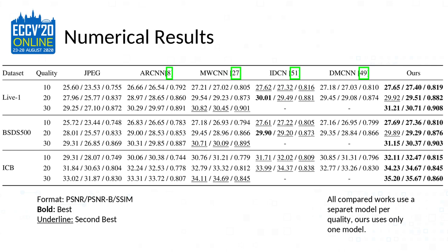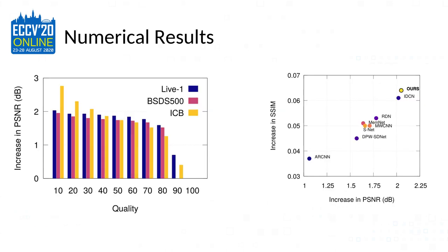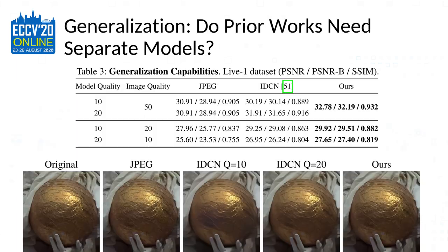In terms of numerical results, I'll present them here without going into detail. These plots show our results on a wide range of qualities, which is easy for us since we don't need to train separate networks. One question is whether prior works really need separate models, and we analyzed that as well.